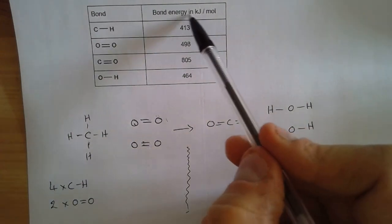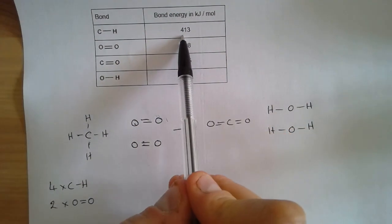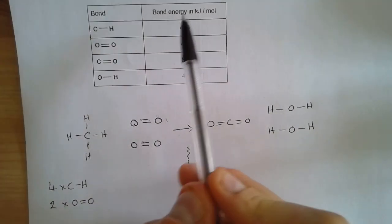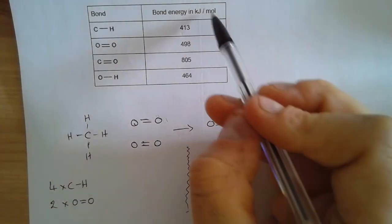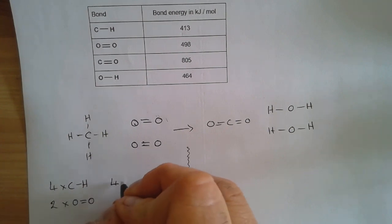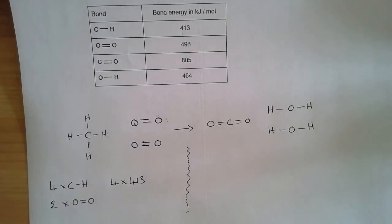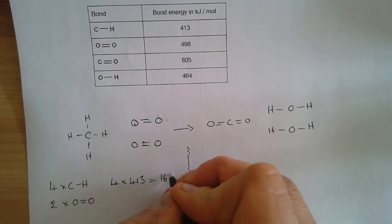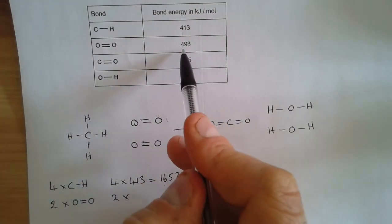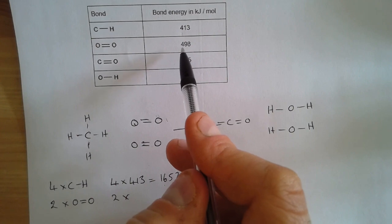So if we have a look at the table of data here, we're told that the energy in a carbon to hydrogen bond is 413 kilojoules per mole. Don't worry too much about the units at the moment, we don't need to understand that for now, we just need to be able to do the calculation. So that will be four times 413, which means the total amount of energy needed to break four carbon to hydrogen bonds is 1652.